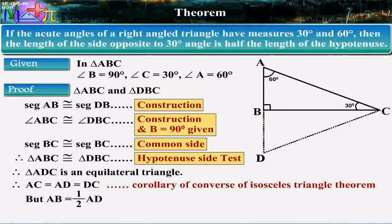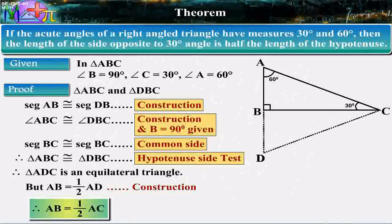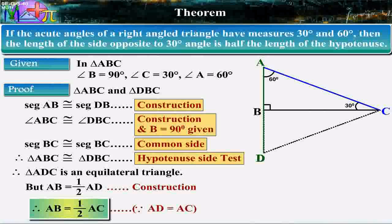But AB is equal to 1 upon 2 AD by construction. Therefore, AB is equal to 1 upon 2 AC, since AD is equal to AC.